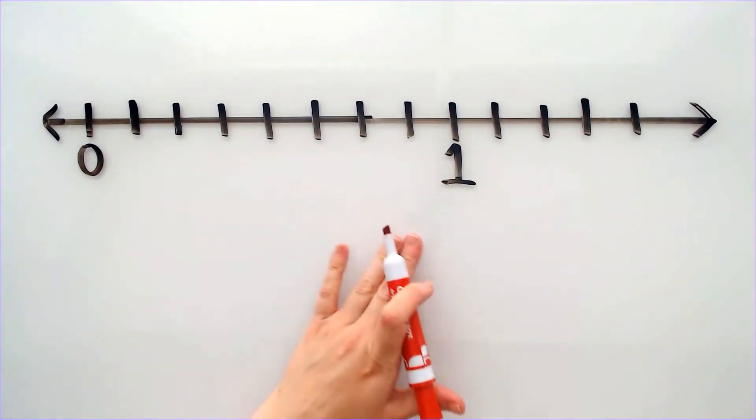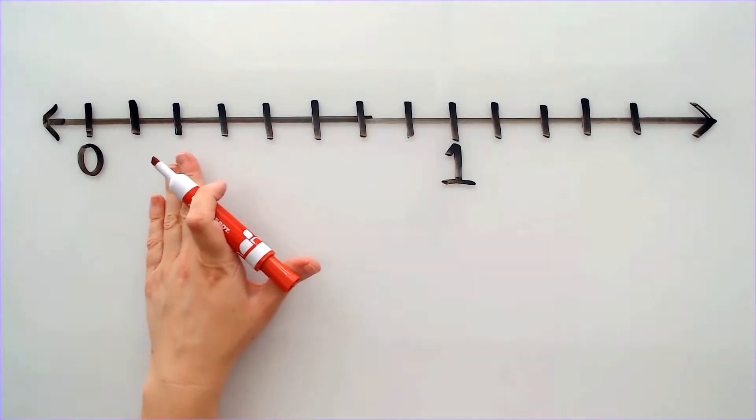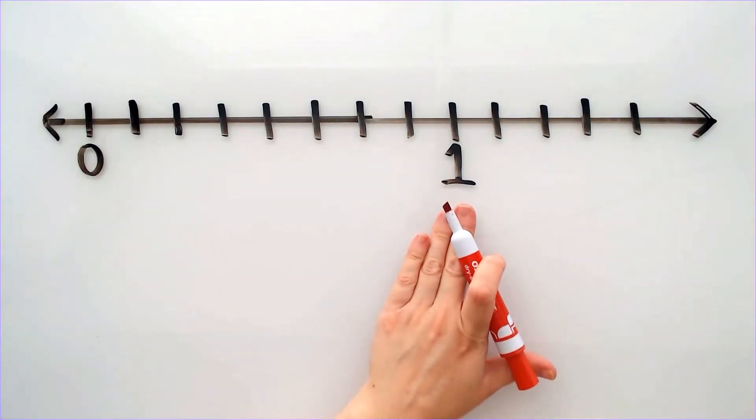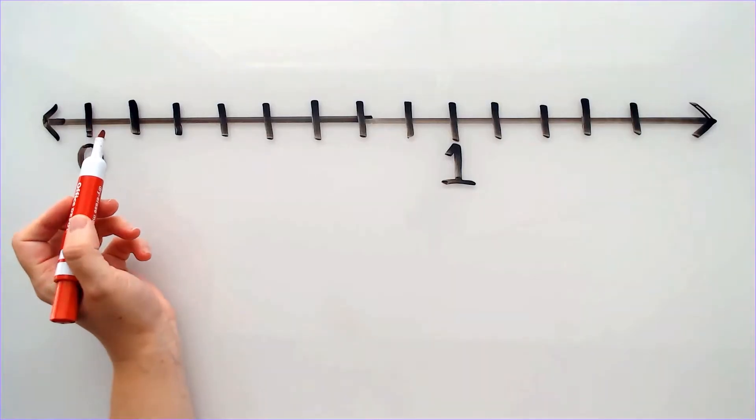I am going to start numbering my number line. In order to start, I will look at how many equal parts there are before I get to the number 1. So I will start by counting.